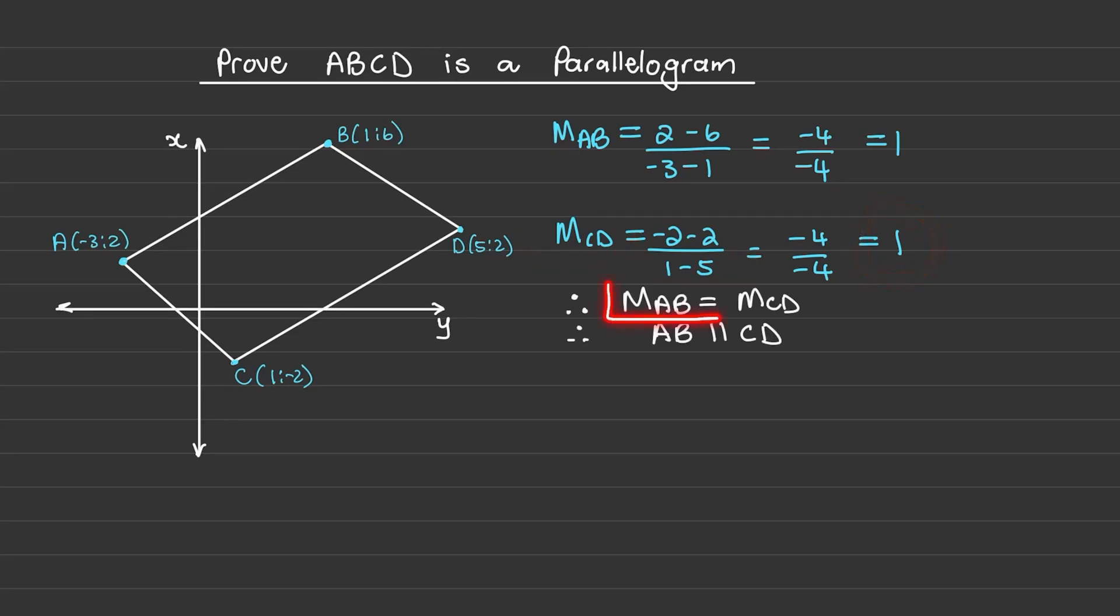Therefore I can conclude that the gradient of AB is equal to the gradient of CD and that the line AB is parallel to the line CD.